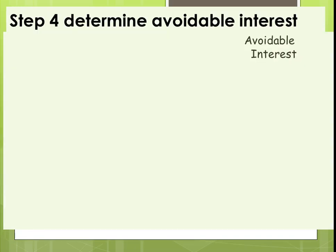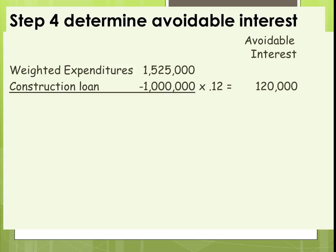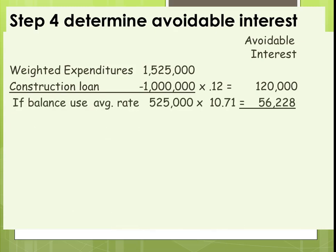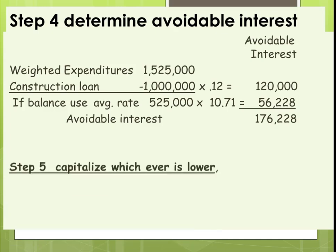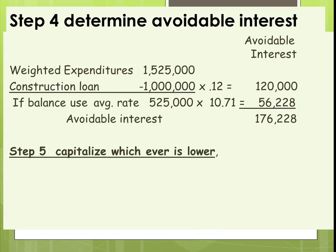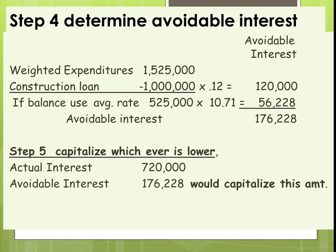Now we figure out the avoidable interest. We take the weighted average expenditures and subtract the construction loan — applying all that interest up to $1,525,000 — then multiply the remaining $525,000 balance of weighted expenditures by the weighted average interest rate of 10.71%. That gives us our avoidable interest. In step five, we compare total interest versus avoidable interest and capitalize whichever is lower — in this case, the avoidable interest is lower.